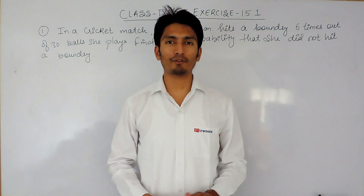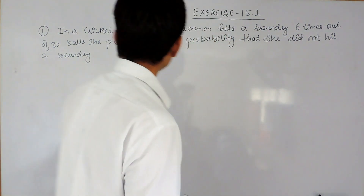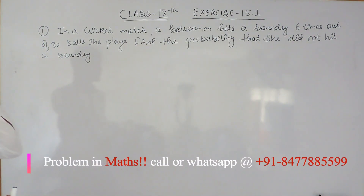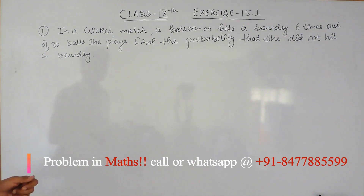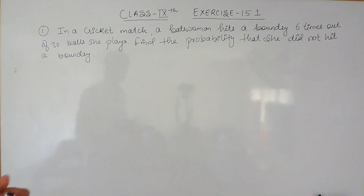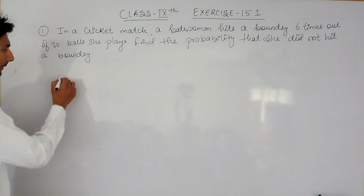Hello everyone, we are from True Maths and in this video we are going to solve question number one of exercise 15.1. The question says: in a cricket match, a batswoman hits a boundary six times out of 30 balls she plays. You have to find the probability that she did not hit a boundary.